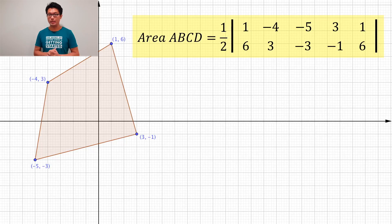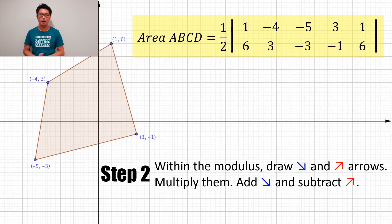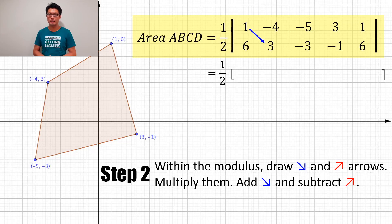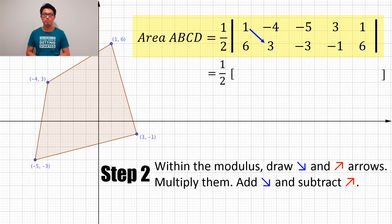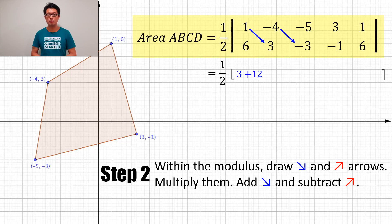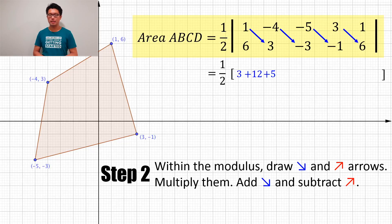Now we move to step two: within the modulus we draw right diagonal arrows. Starting from the top-left number, which is 1, we draw a right diagonal arrow down to 3 and multiply — 1 times 3 gives us 3. Then we move to -4, multiply with -3, which gives us positive 12, and we add these numbers together. We follow this procedure all the way to the last pair.